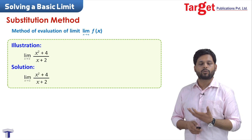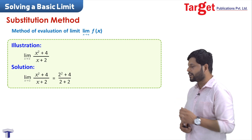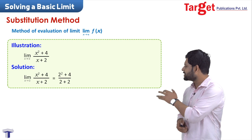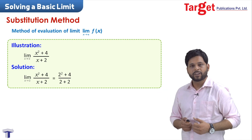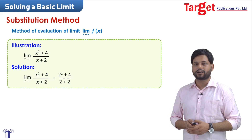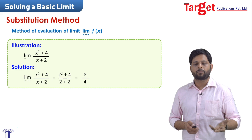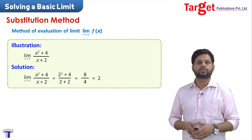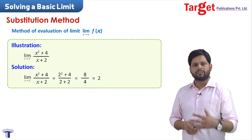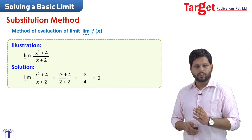I directly took the number 2 and substituted it wherever we find x. So that is 2 squared plus 4 in the numerator and 2 plus 2 in the denominator. Your particular answer is 8 by 4, that is equal to 2. So that is how we solve a very basic limit — you just take the value of x and substitute it there.